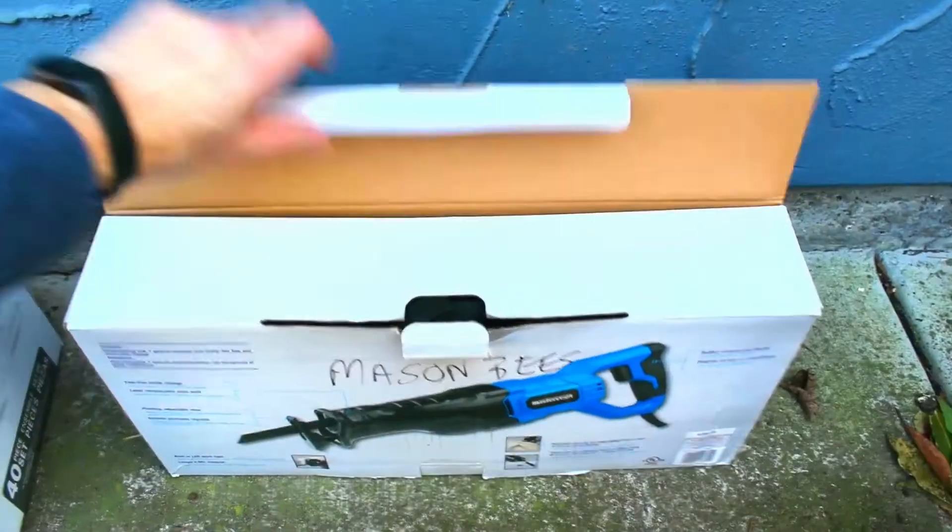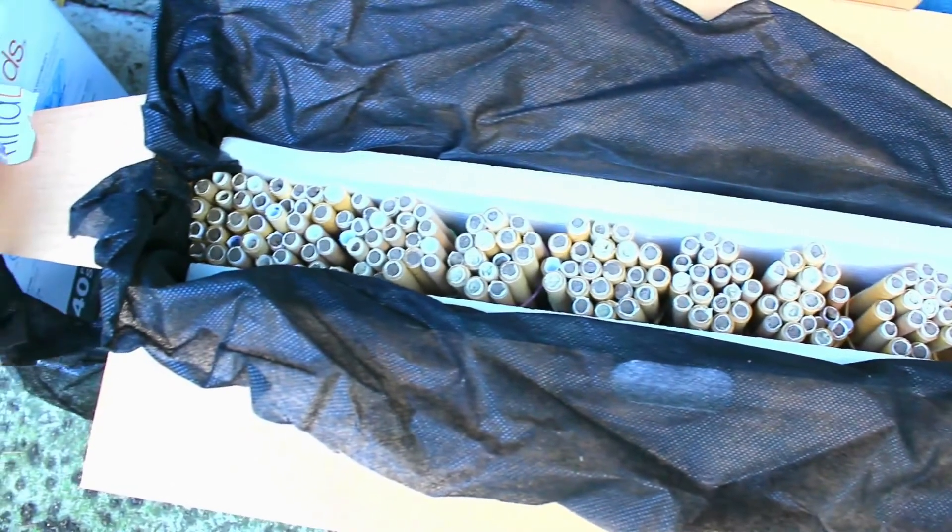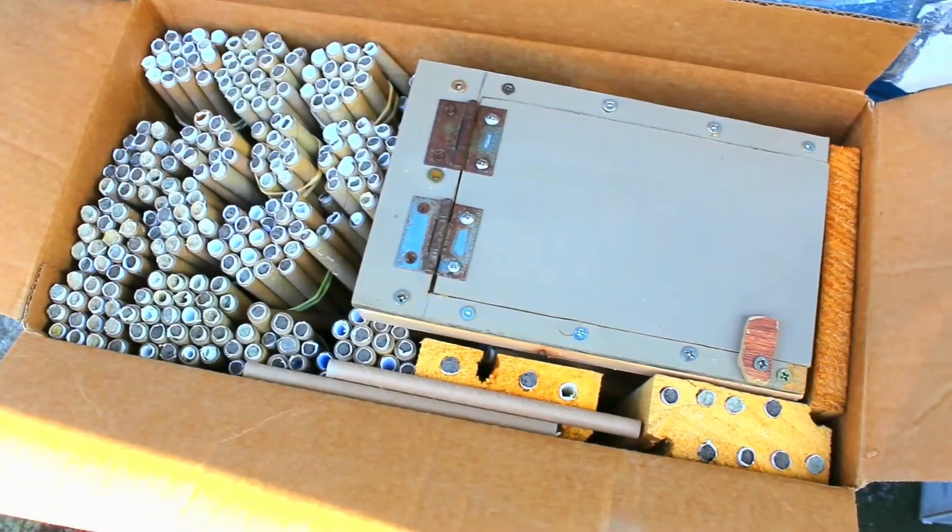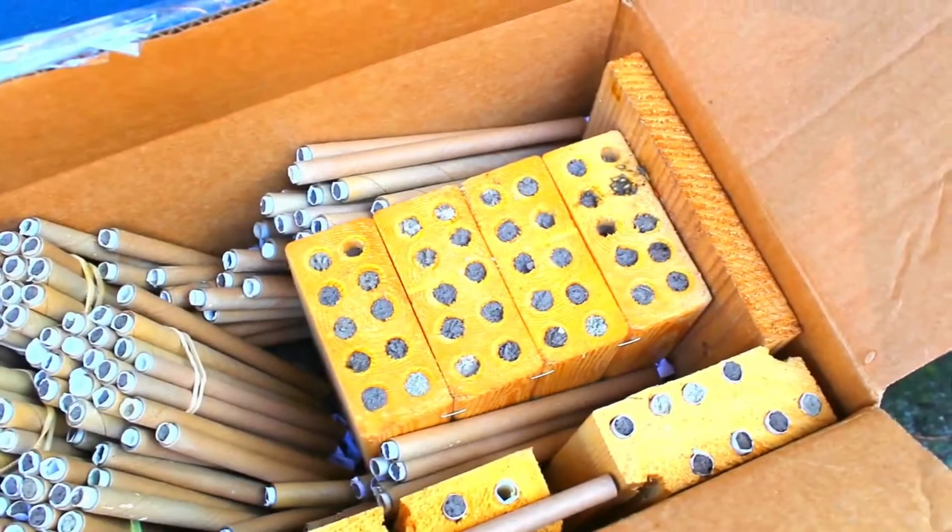Although not technically necessary, it's a good idea to take down the nesting tubes and houses and store them in boxes in the garage after the season has ended. This will help protect the cocoons from any predators and parasites.